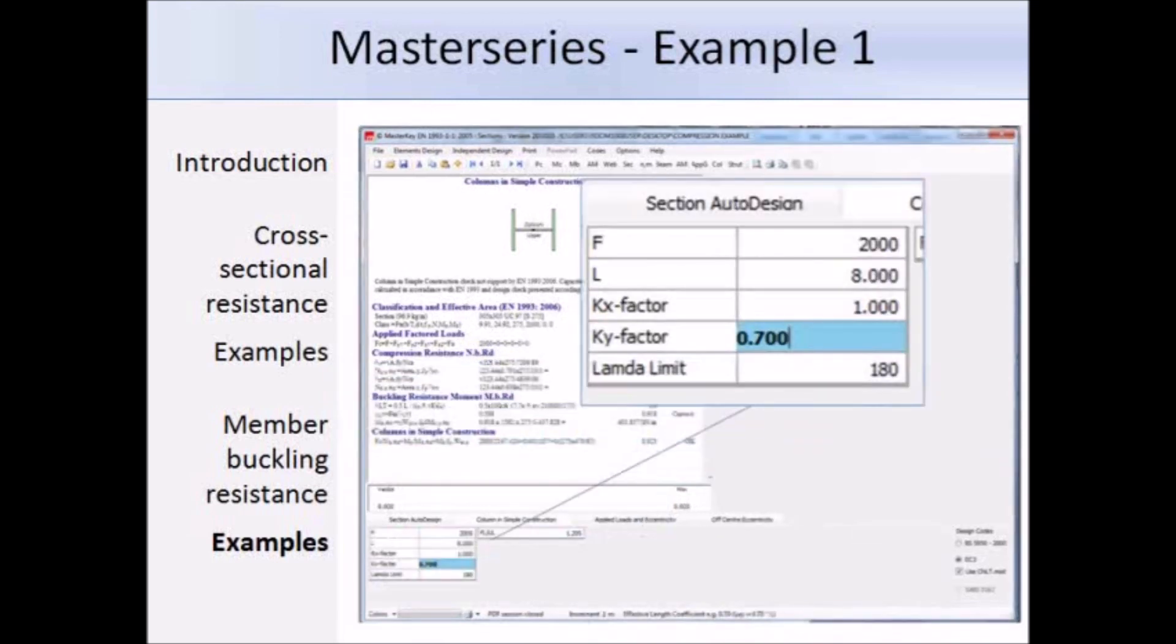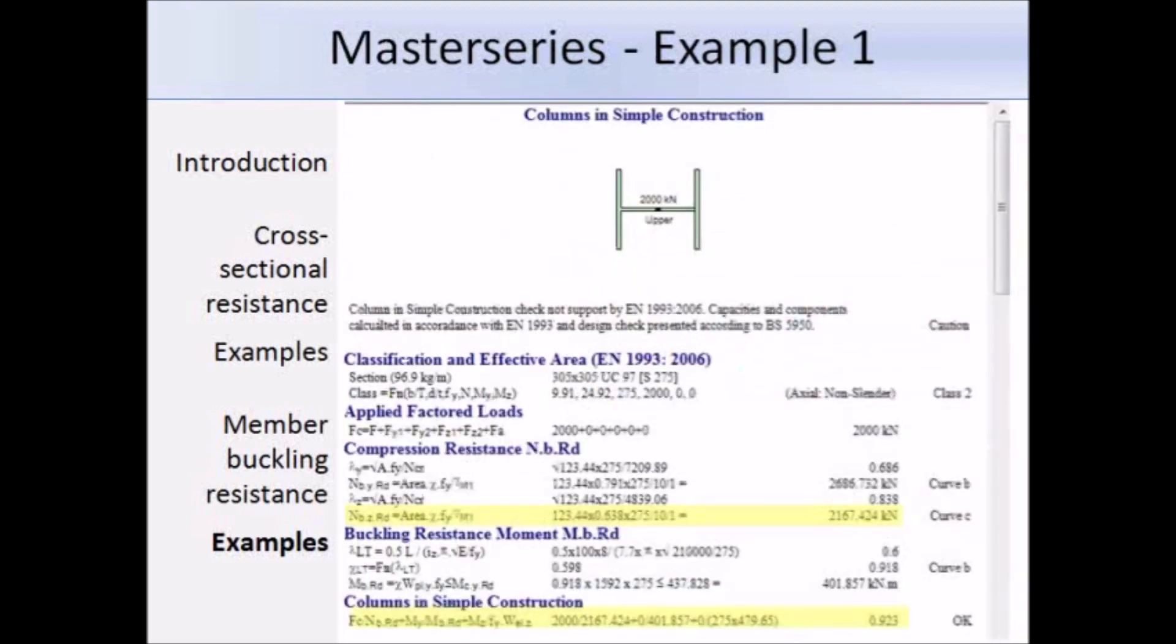You might remember that the effective length factors in the example are not the same. For the minor axis they had a factor of 0.7, so here in this box for the ky factor I put in a value of 0.7, and that's for the minor axis. Here are the results that come up on the screen, and I've highlighted the key area. The compression resistance about the minor axis is approximately 2167 kN, and if we compare to the answer given in the example we've got a value of 2160 kN, so the answers are the same. At the bottom we have the ratio of the design compression force and design compression resistance, and we have a value of 0.93, and again that's the same as the example.